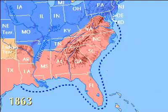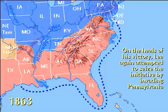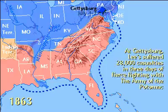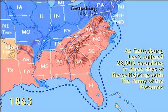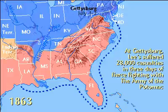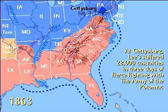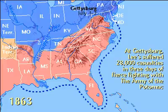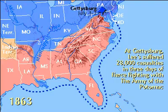Lee seized the initiative by invading Pennsylvania, hoping to relieve some pressure on Vicksburg. Union General George Meade and Lee met just west of a town called Gettysburg. In the ensuing battle, the South suffered 28,000 casualties in three days, including 6,000 in Pickett's Charge. Vicksburg fell the next day.